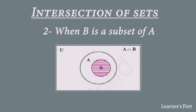The second case for intersection is when B is a subset of A. Here A is the bigger set and B is drawn inside it. Since all elements of B are present in A, the common elements are those of set B. So when representing A intersection B, we shade only the area of set B.